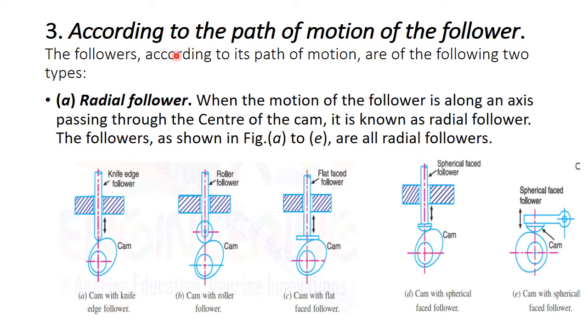Third, according to the path of the motion of follower, we have divided follower into two types. First one is radial follower. When the motion of follower is along the axis passing through the center of cam, it is known as radial follower. You can see that from diagram A to E, line of action passing through cam and follower is same. And you can see that cam rotates clockwise or anticlockwise. Follower moves reciprocating up and down and it's followed the direction center of the cam. All diagrams shown same situation related to the radial follower.